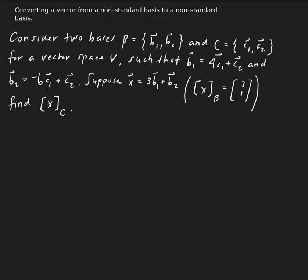And suppose that we have a vector x, and it's defined by linear combination by the vectors in beta. So based on this, we want to find the vector x based in the basis C.